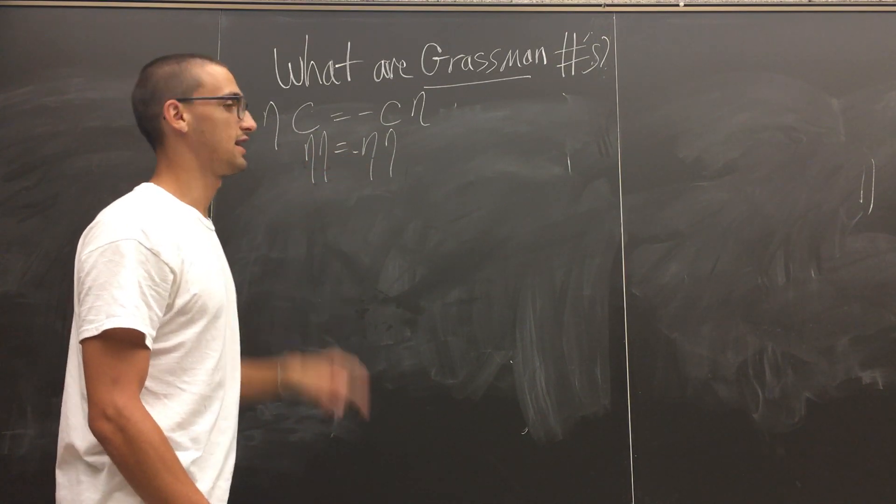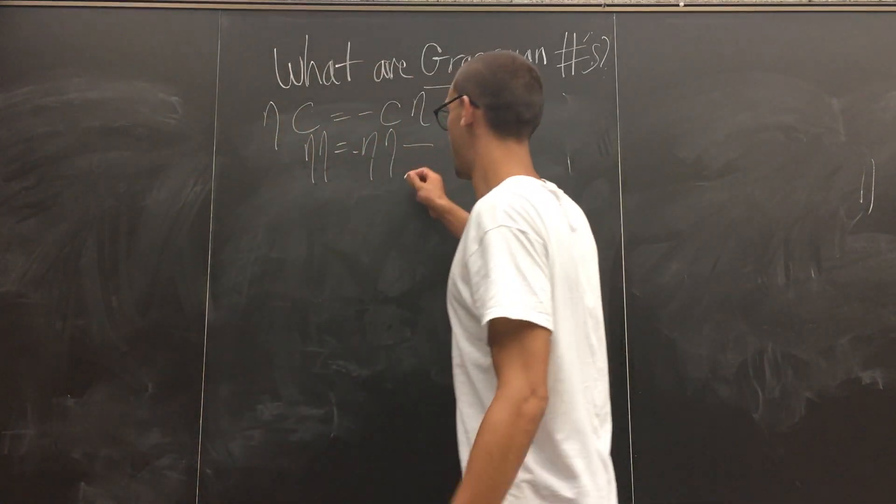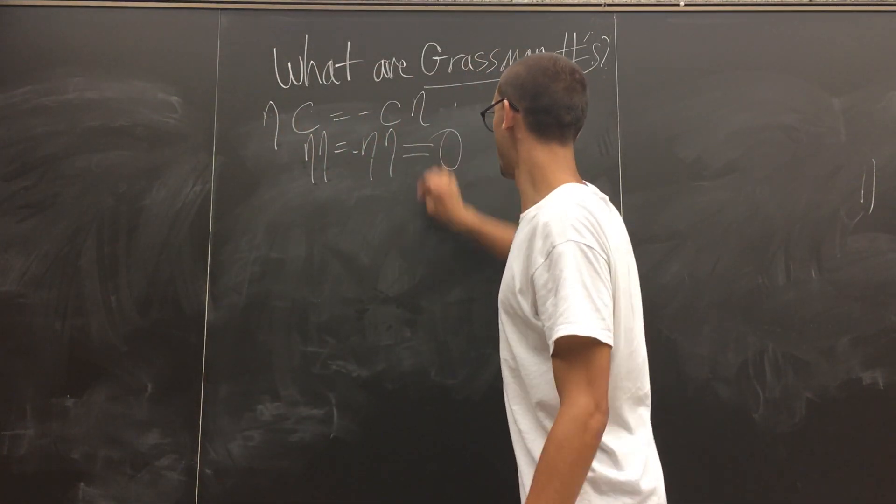η η equals minus η η. So the only number η η, or consequently η η could be, is zero.